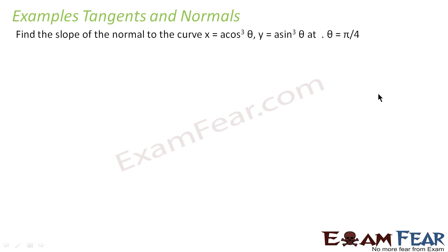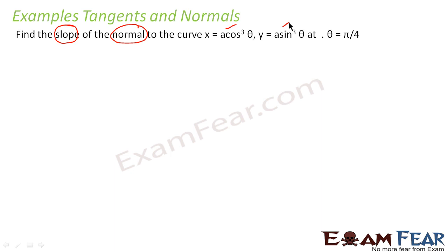Here we have to find the slope of the normal. Please note — here instead of tangent, I am finding the slope of the normal to this curve. The curve is x = a cos³θ and y = a sin³θ, at θ = π/4.